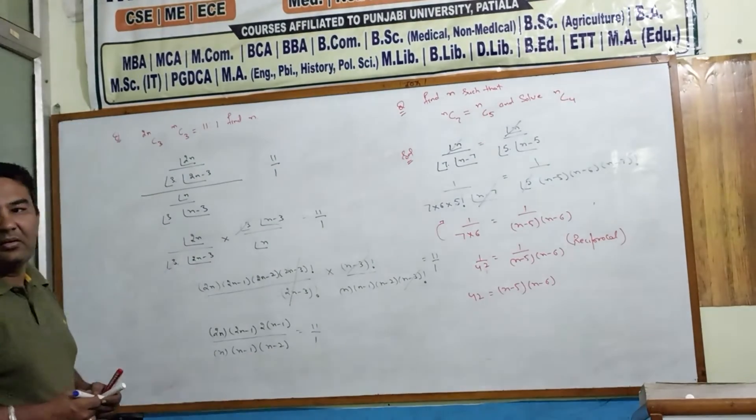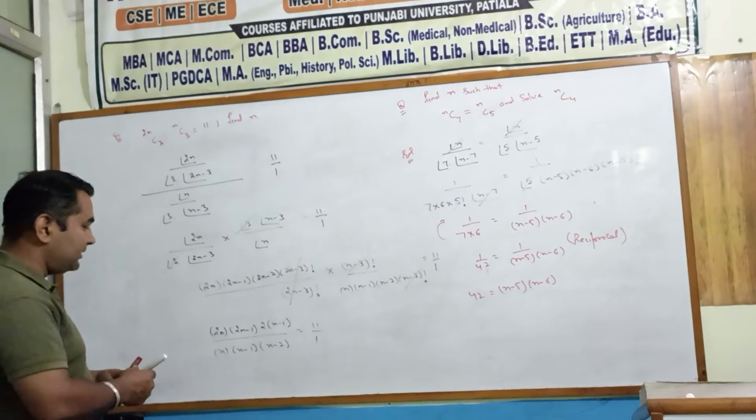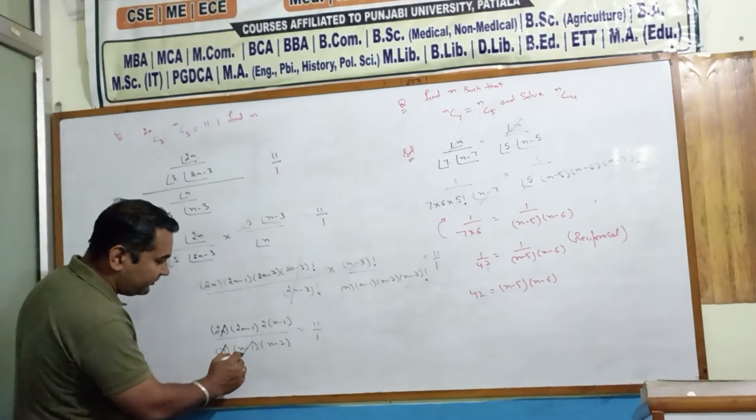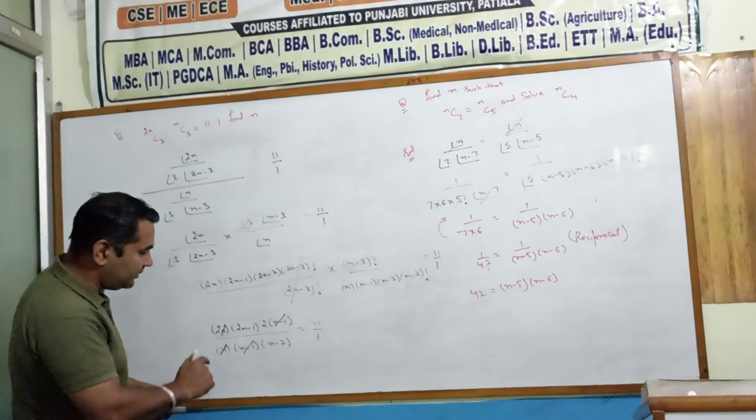11 by 1 cancels with N and minus 1 with N minus 1. Multiply.